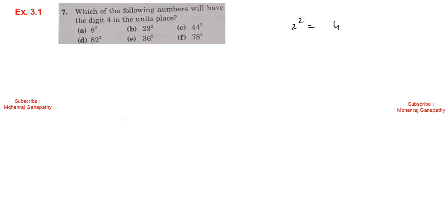Exercise 3.1, sum number 7: Which of the following numbers will have the digit 4 in the units place? A number ending in 2 squared gives unit digit 4, and a number ending in 8 squared also gives unit digit 4. So the answers are numbers whose last digit is 2 or 8 — for example, 82, 78, 88.